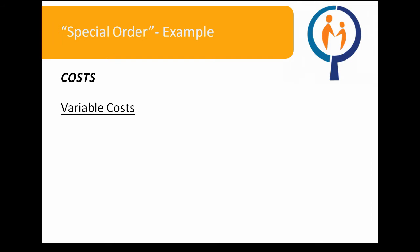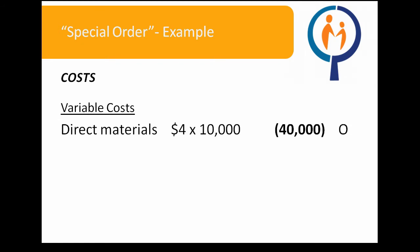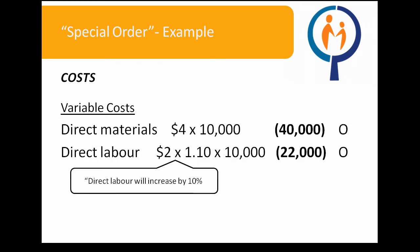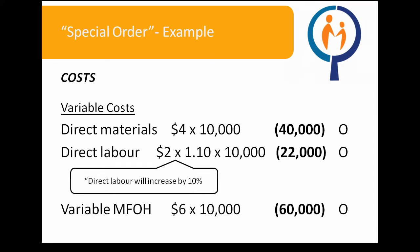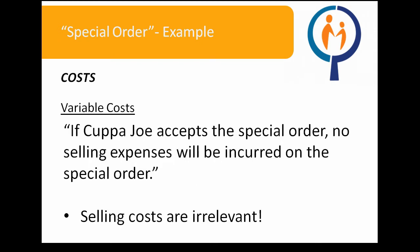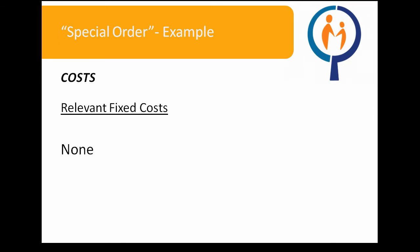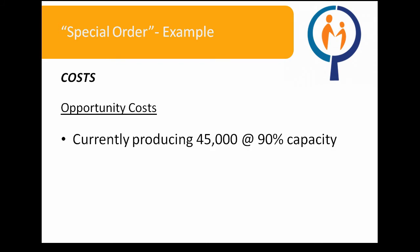Let's begin by looking at the costs associated with this special order. To produce 10,000 bags of Kahlua, we require $40,000 of direct materials, $22,000 of direct labor, and $60,000 of variable manufacturing overhead. Remember that no selling expenses will be incurred on the special order, so selling costs become irrelevant when considering incremental variable costs. There are no relevant fixed costs in this scenario.